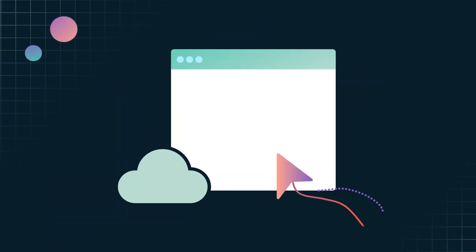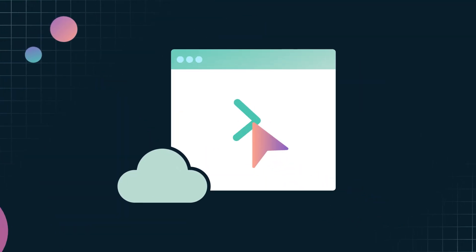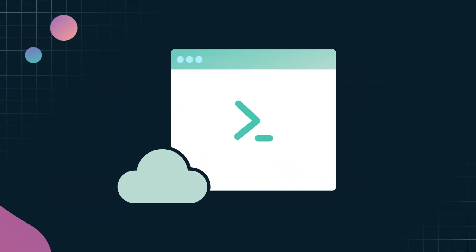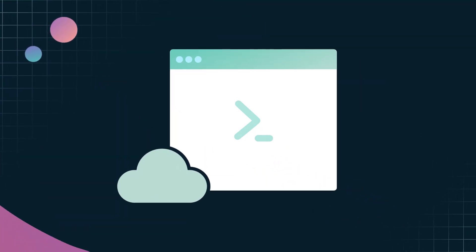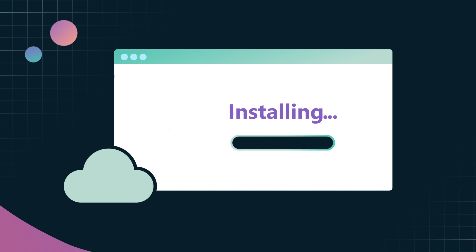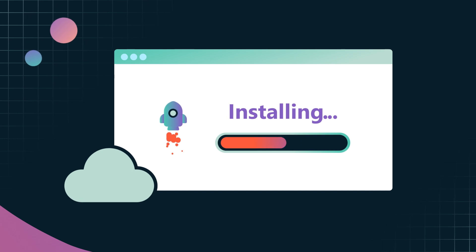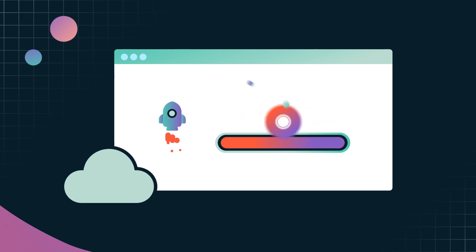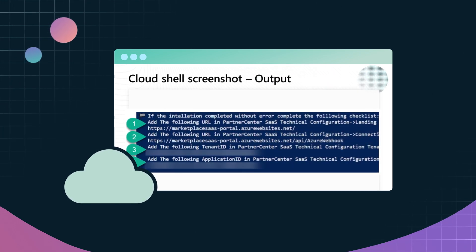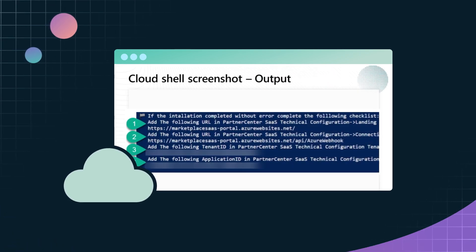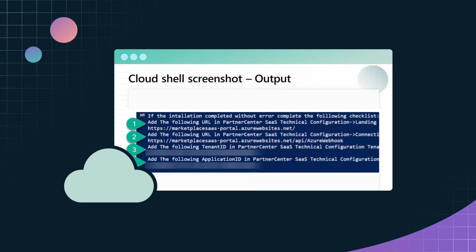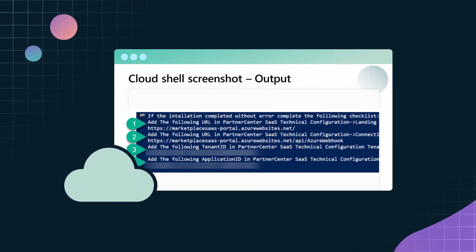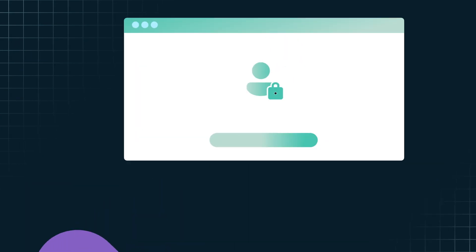SAS Accelerator installation uses a simple PowerShell script that runs in the Azure Portal Cloud Shell. When the installer completes, it provides the information needed to complete the technical configuration section of the SAS offer in Partner Center.